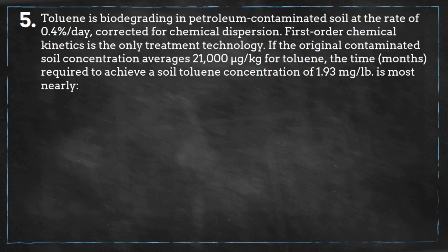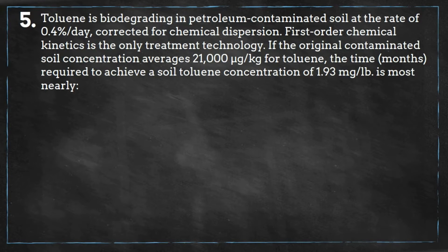Toluene is biodegrading in petroleum contaminated soil at the rate of 0.4% per day, corrected for chemical dispersion. First order chemical kinetics is the only treatment technology. If the original contaminated soil concentration averages 21,000 micrograms per kilogram for toluene,